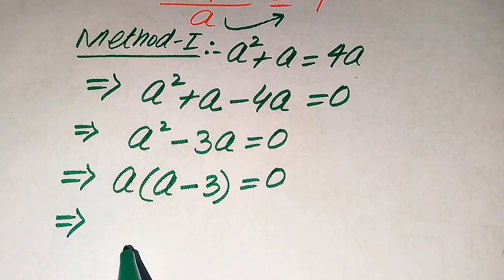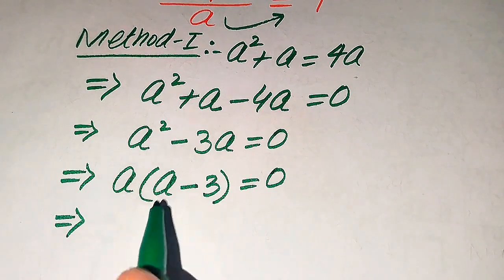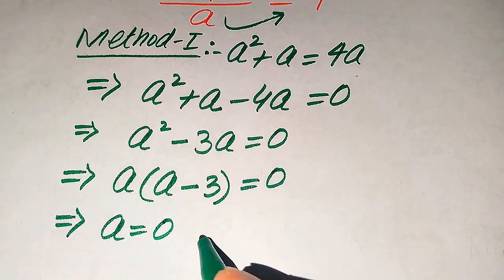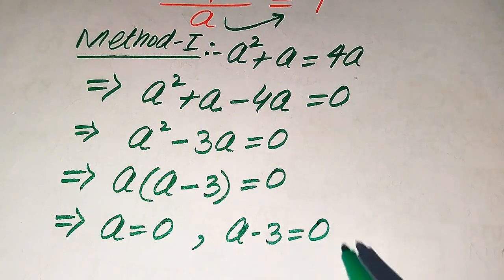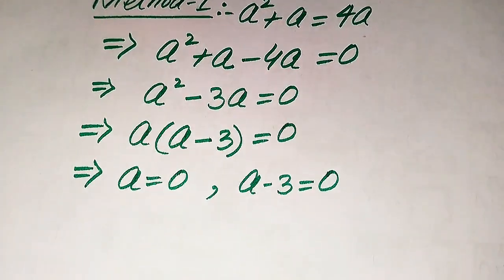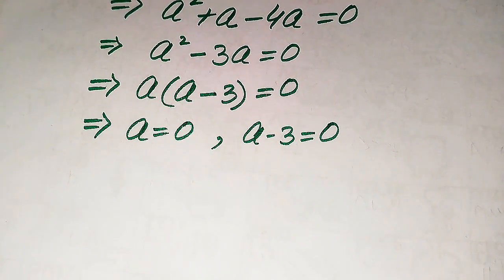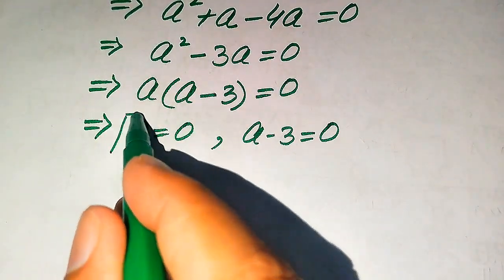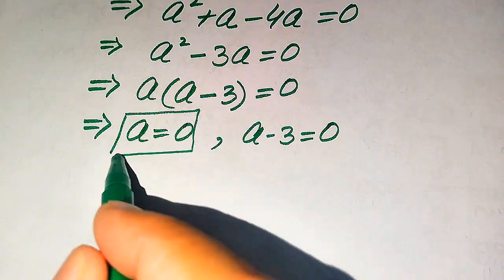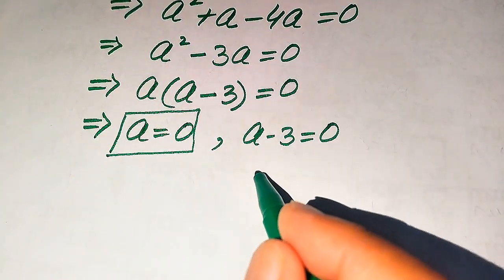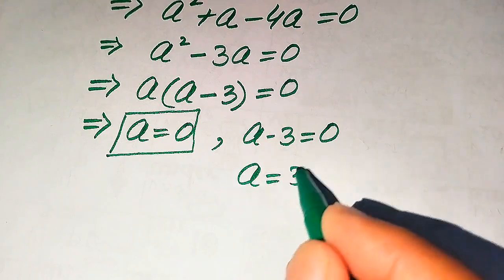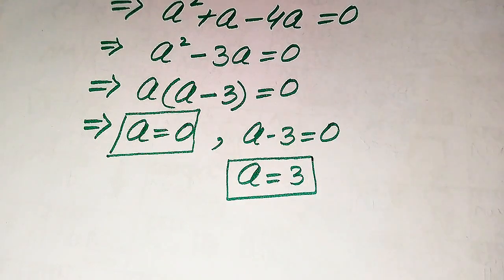We split this into two cases. The first case gives a equals 0, and the second case is a minus 3 equals 0. Moving minus 3 to the right hand side gives a equals positive 3. So from the first method we get two roots: a equals 0 and a equals 3.